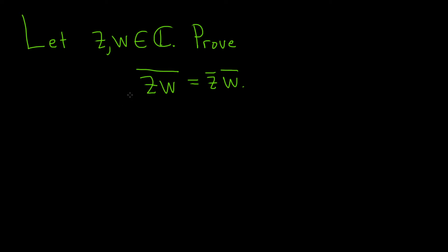In this problem, we have two complex numbers, and we have to prove that the conjugate of z times w is equal to the conjugate of z times the conjugate of w. Let's go ahead and go through the proof. So, proof. So we start the proof by writing down our two complex numbers. Let z and w be complex numbers.